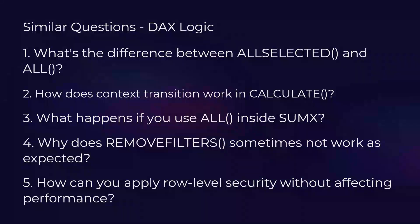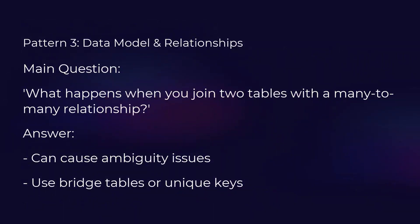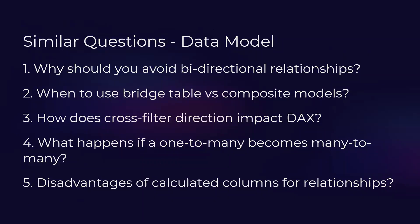Pattern three is data model and relationships. What happens when you join two tables with a many-to-many relationship? — It causes ambiguity issues because results might be impacted. You can use bridge tables or unique keys to solve this. Why should you avoid bi-directional filtering? — It creates circular dependencies and leads to performance issues.